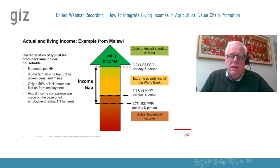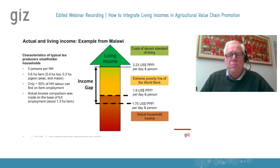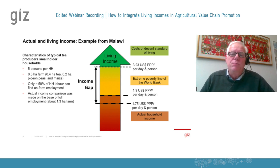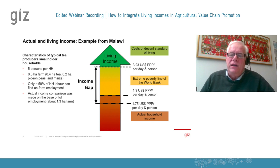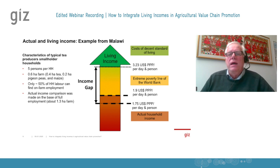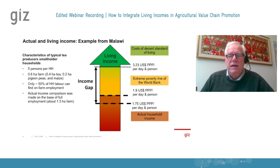We converted the money into US dollar purchasing power parity, with which the World Bank works and which has traditionally been an important benchmark for GIZ. We put it alongside the living income benchmark, which stands at 3.23 US dollar purchasing power parity. What transpired was that the actual household income per person per day available is just 1.75 US dollars — much below the living income benchmark, and also significantly below the US dollar World Bank poverty line, which we regard as a survival line.